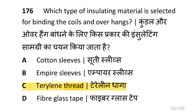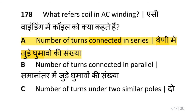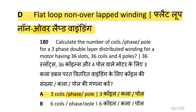The insulating material selected for binding coils and overhangs is terylene thread. The insulation used for cuffing in AC winding is fabric-based adhesive tape. A coil in AC winding refers to the number of turns connected in series. The AC winding type where the number of coils per pole per phase is more than one at different pitches is flat loop non-overlapped winding.